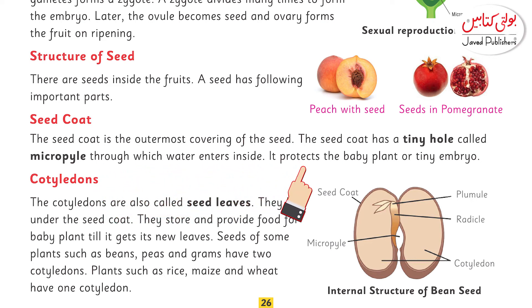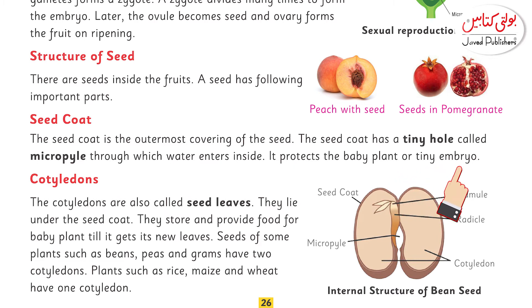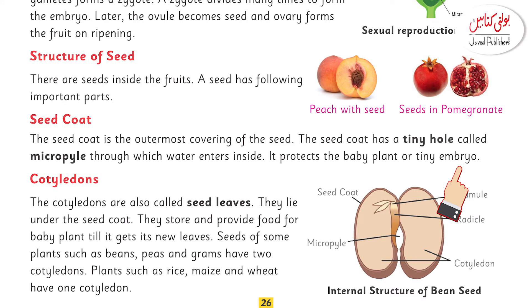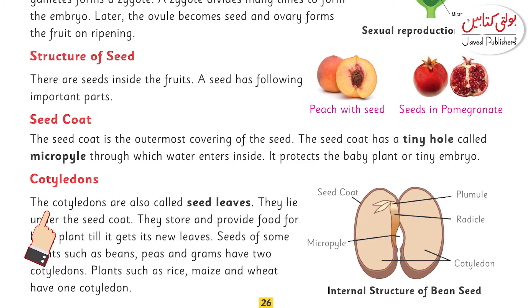The seed coat protects the baby plant and the tiny embryo. That is its function — to protect the embryo, which cannot protect itself. The seed coat provides that protection. Now we talk about cotyledons.